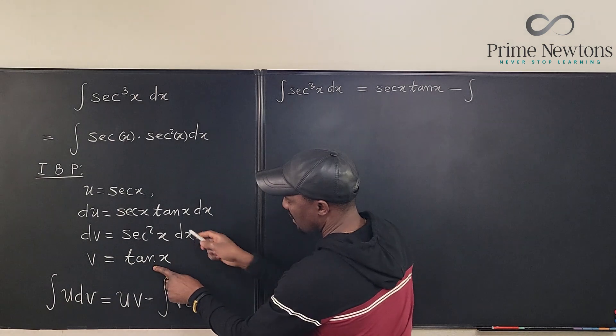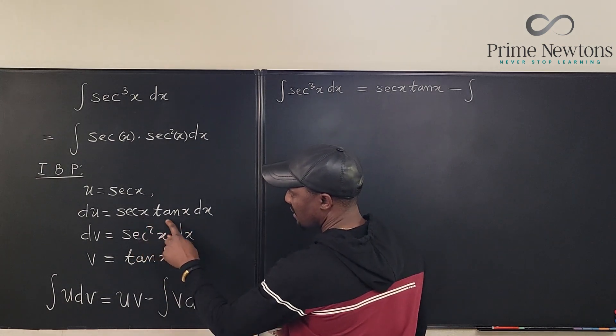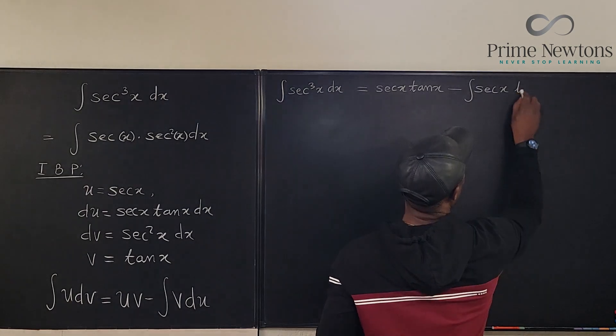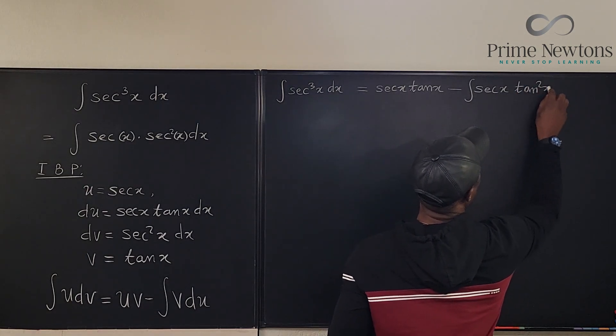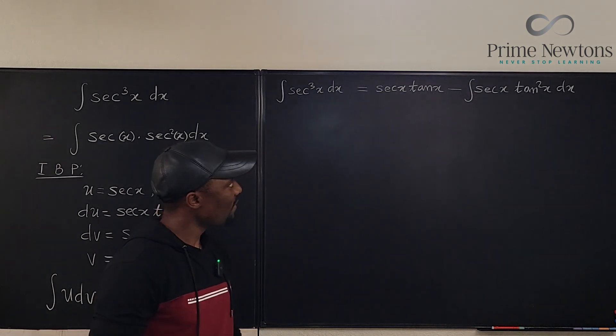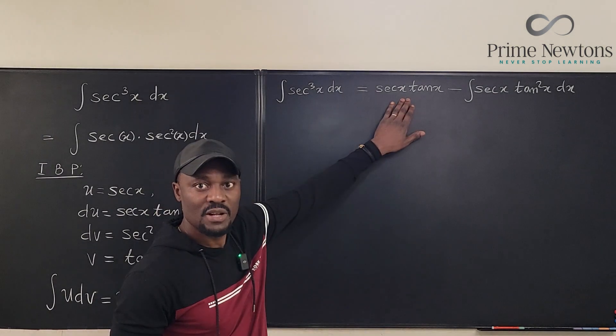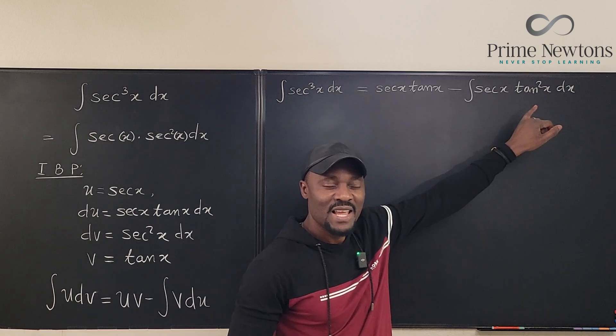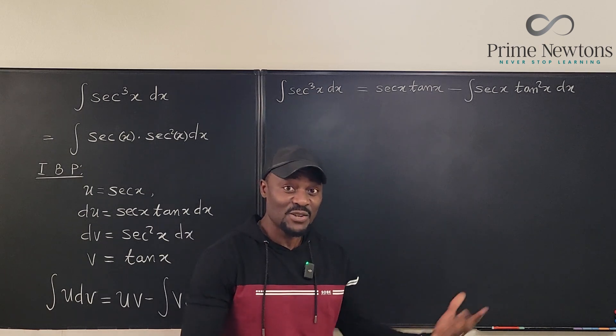v times du. Look, if you multiply this by this, you're gonna end up with secant x tan x tan squared x. So it is secant x tan squared x dx. So this we don't need to bother ourselves with. But you see this secant x tan squared x, is there a way again we can integrate that?